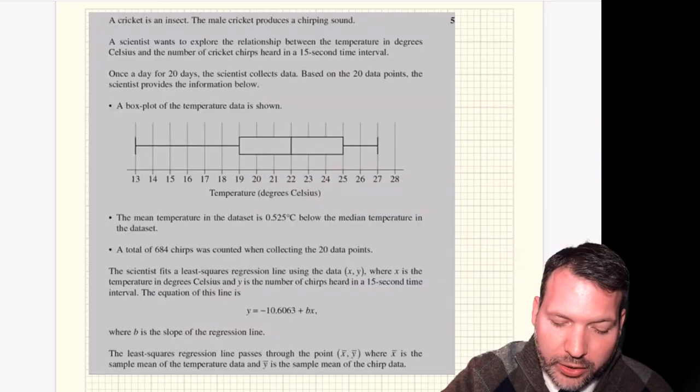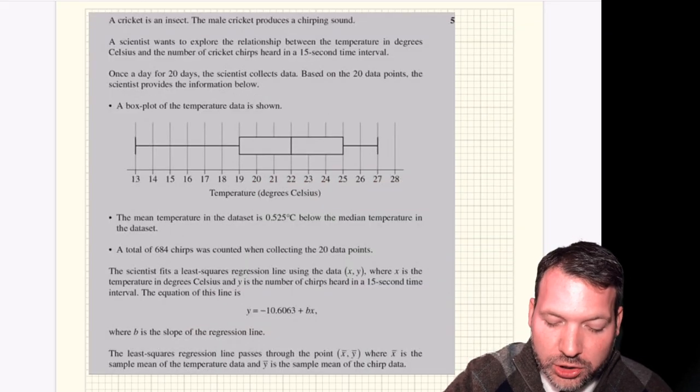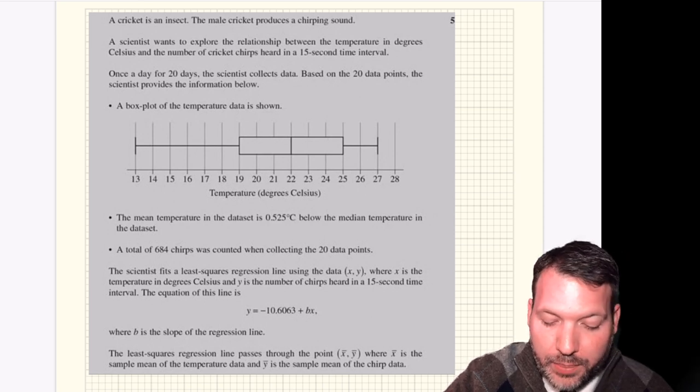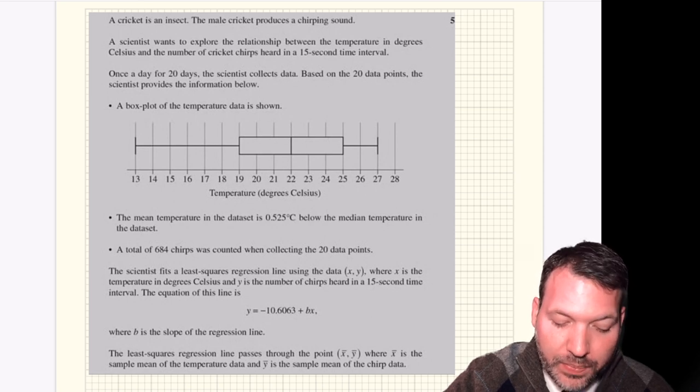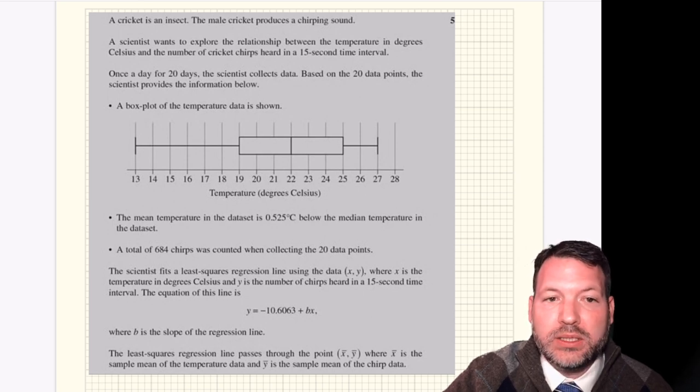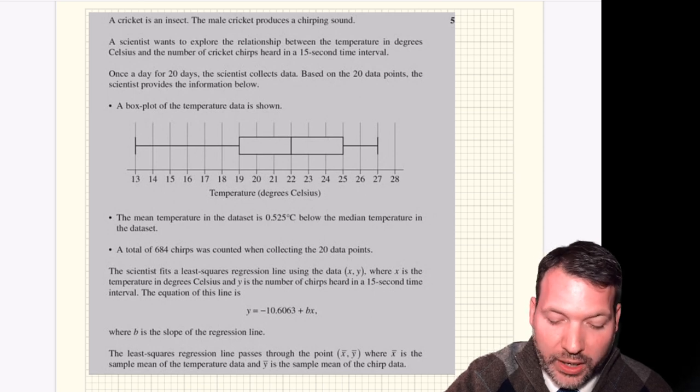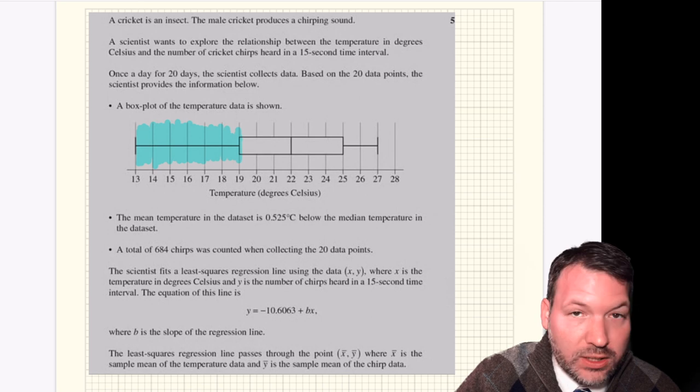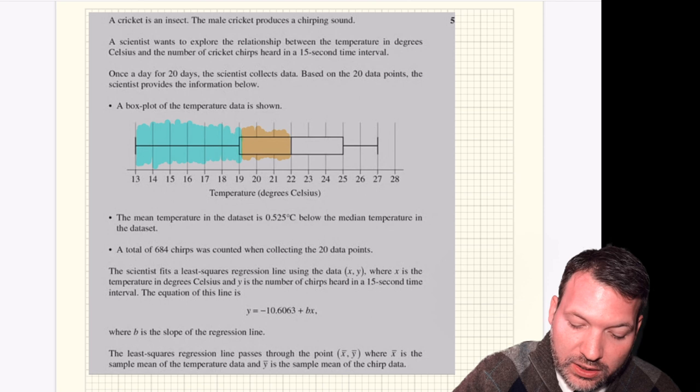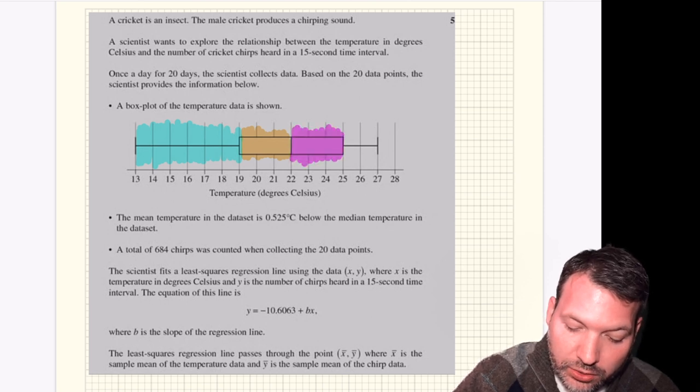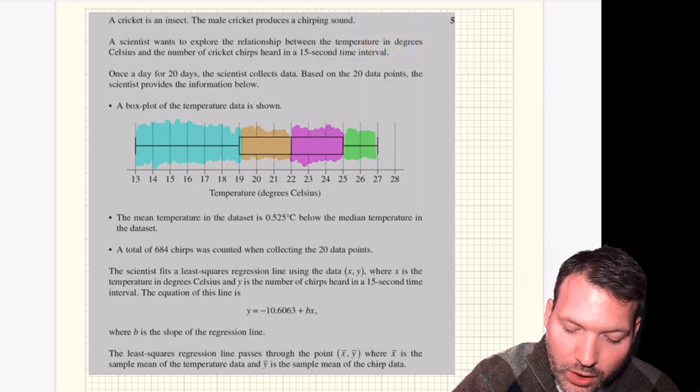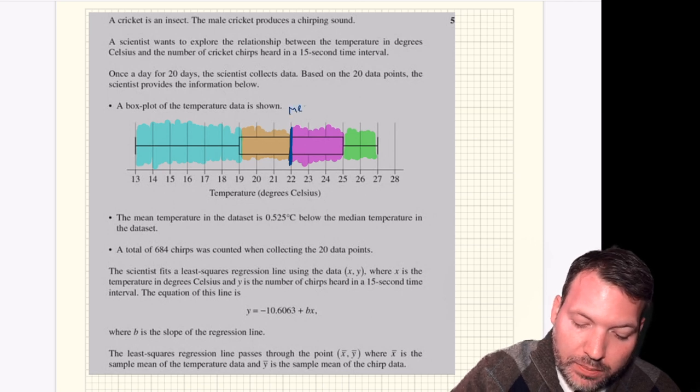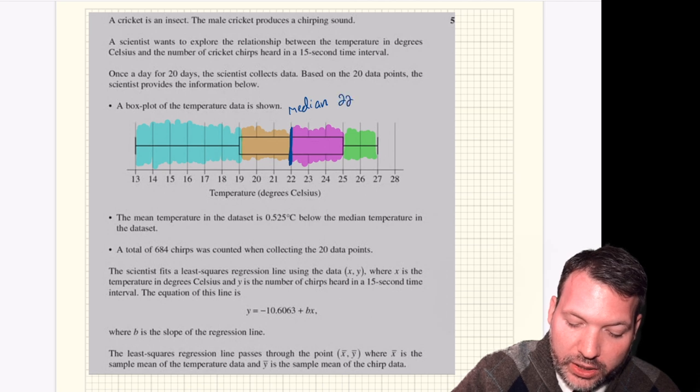A cricket is an insect. Good start. The male cricket produces a chirping sound and some scientist wants to explore the relationship between the temperature in degrees Celsius and the number of cricket chirps heard in a 15 second time interval. Once a day for 20 days, the scientist collects data. Based on the 20 data points, the scientist provides the information below. A box plot of the temperature data is shown. So we're looking at temperature data and the different temperatures must fall into these four areas. If you know how a box plot works, you know this represents a quarter of the data. Right away, one thing that you should know about a box plot is that right here in the middle is the median. And so the median day would have been 22 degrees Celsius.